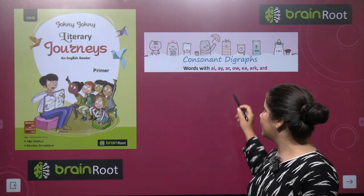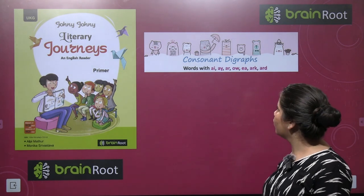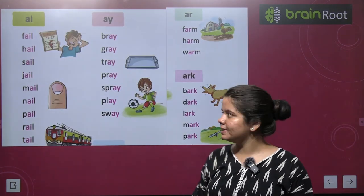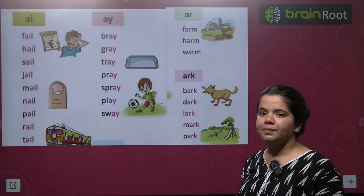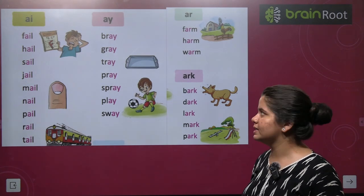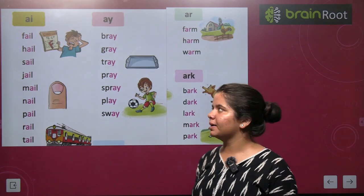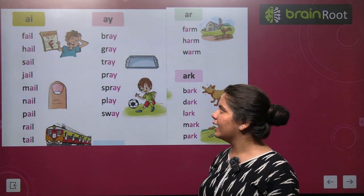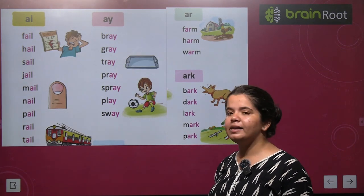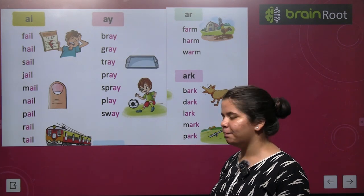Words with AI, AY, AR, OW, EA, and ARK. So now we will start new words. AI words: fail, hail, sail, jail, mail, tail, rail, pay.